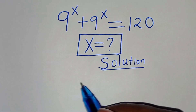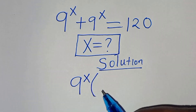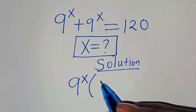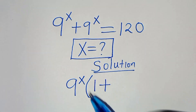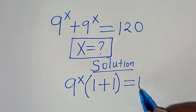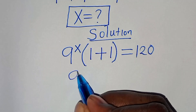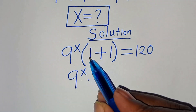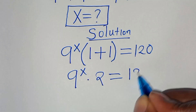Now we have that 9 to the power of x is common here, so we factor out 9 to the power of x. 9 to the power of x divided by 9 to the power of x is 1, plus 9 to the power of x divided by 9 to the power of x is 1. So this is the same thing as 9 to the power of x multiplied by 1 plus 1, which is 2. This is equal to 120.